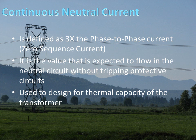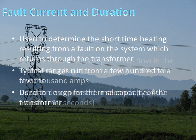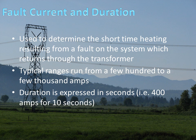The fault current duration, on the other hand, is used to determine the short-time heating resulting from a fault on the system which returns through the transformer. Typical ranges run from a few hundred amps to a few thousand amps. Duration is expressed in seconds, not cycles. A typical example would be 400 amps for 10 seconds.